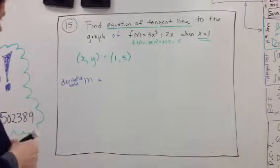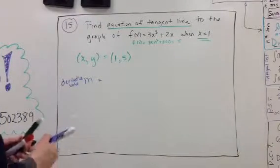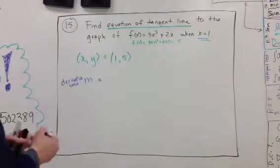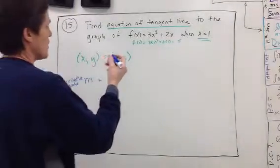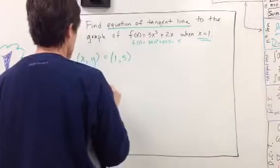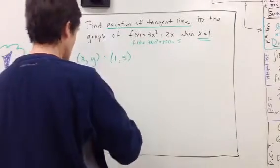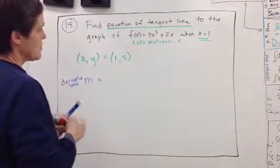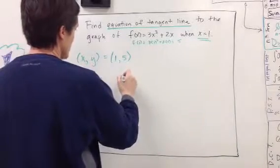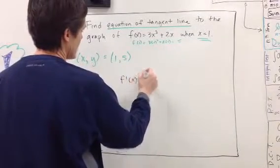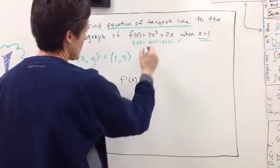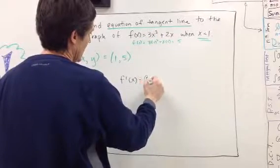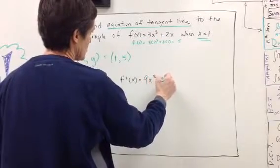For the derivative, or for the slope, we need to find the derivative using our derivative rules. If f(x) is 3x³ + 2x, then f'(x) using the power rule is 3 times 3, which is 9x² plus 2. So that's my derivative.